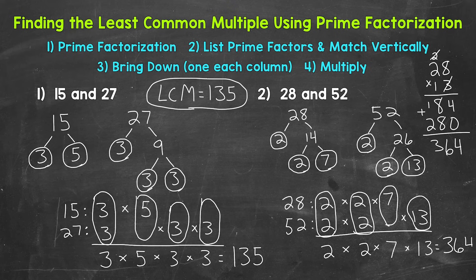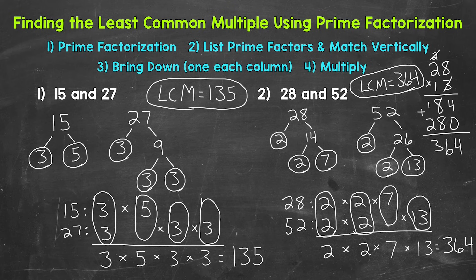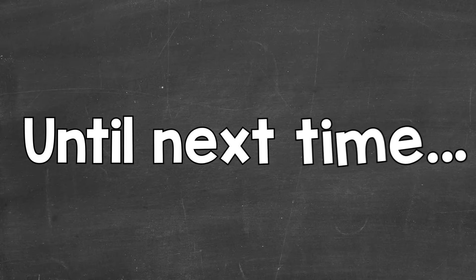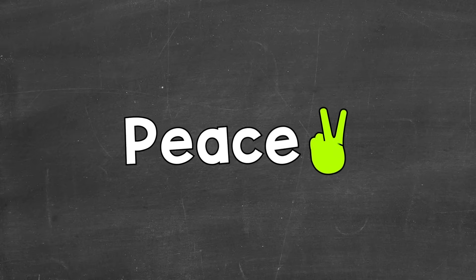So the least common multiple of 28 and 52 is 364. There you have it — that's how to find the least common multiple, the LCM, using two different strategies: listing out multiples and using prime factorization. I hope that helped. Thanks so much for watching. Until next time, peace.